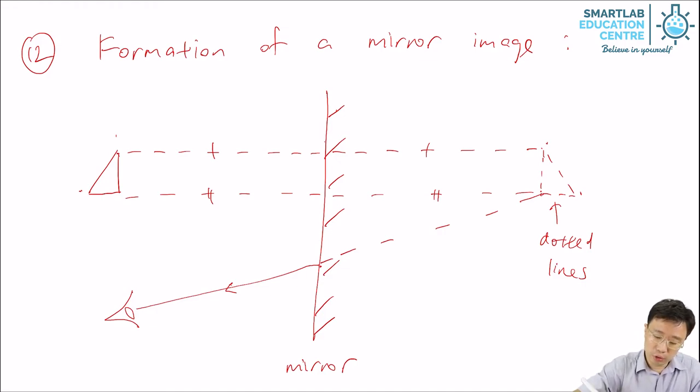And then you draw a line from the corresponding point of the object to where the first line cuts the mirror. Now what does this show? This shows a ray of light traveling from the object to the mirror, bounces off the mirror, and enters the eye, but the eye will trace the ray backwards and then it will appear to come from where the image is.